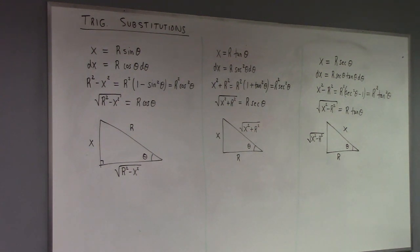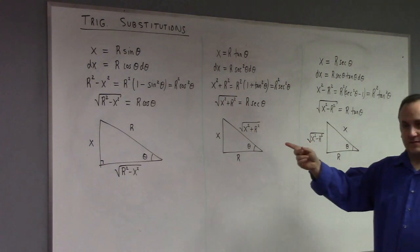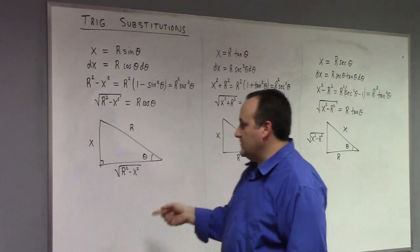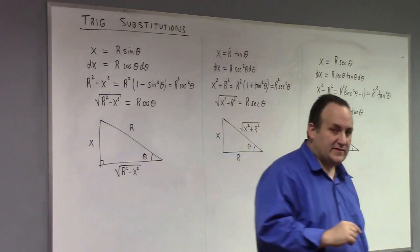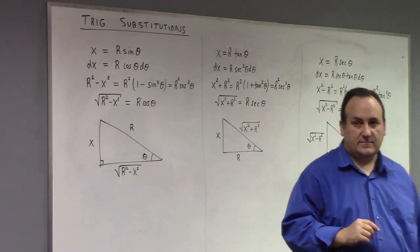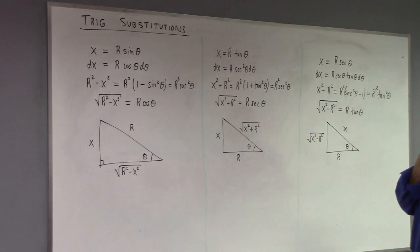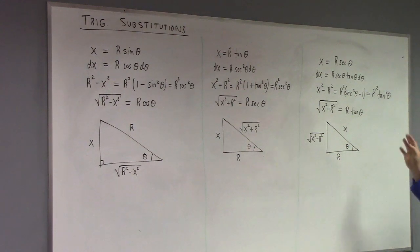I showed you an example last class at the end — we used the first one. We used a sine substitution to integrate the square root of 1 minus x squared. We saw we could do that. So I'm going to explore examples that show you the other substitutions this class.